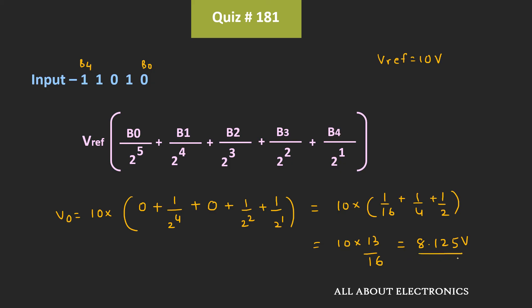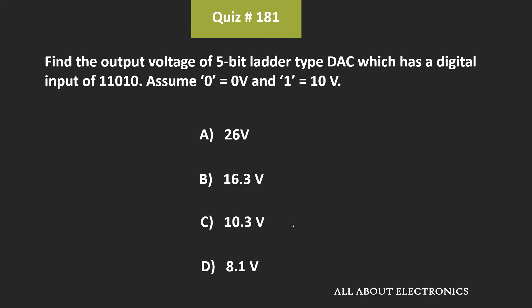That means we can say that for the input of 11010, the output voltage Vout will be equal to 8.125V. That means for the given question, D is the correct answer.